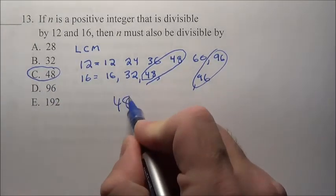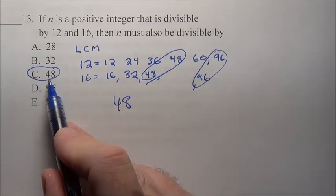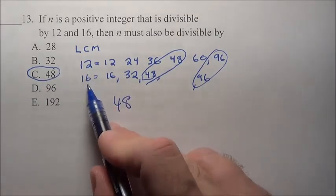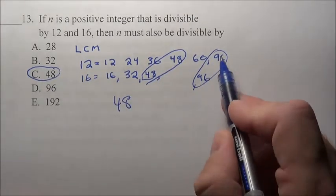Take 48, what if our number was 48? 48 is divisible by 48, it's divisible by 12, it's divisible by 16, but 48 is not divisible by 96.